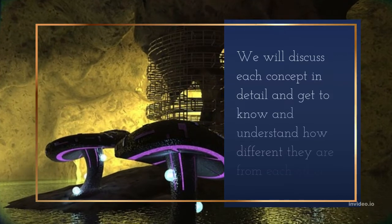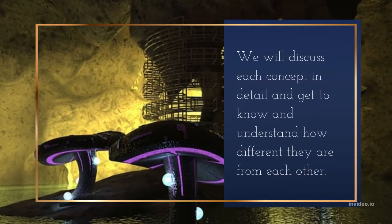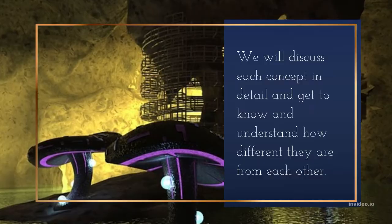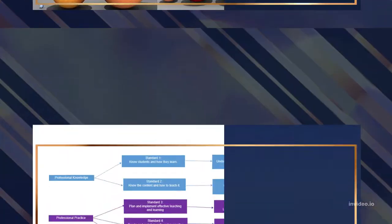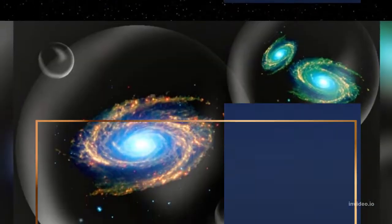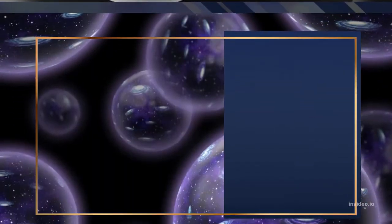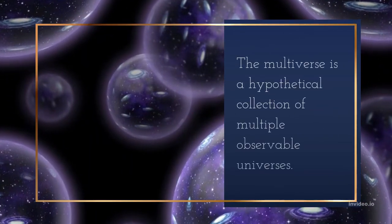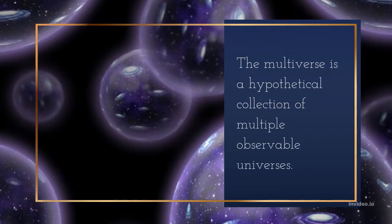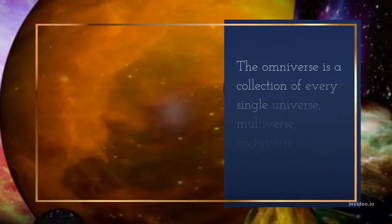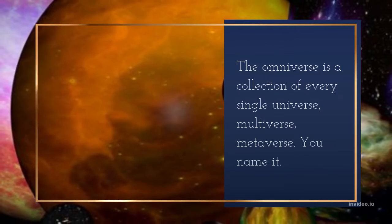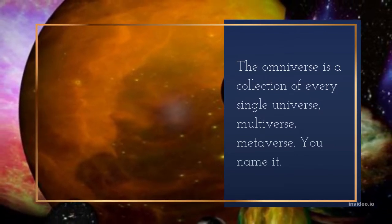We will discuss each concept in detail and get to know and understand how different they are from each other. In short, the universe is all of space and time and its contents. The multiverse is a hypothetical collection of multiple observable universes. The omniverse is a collection of every single universe, multiverse, metaverse, you name it.